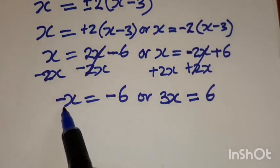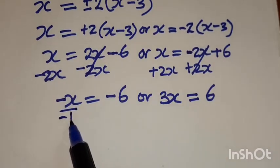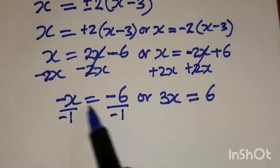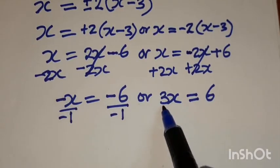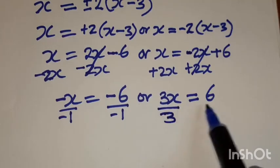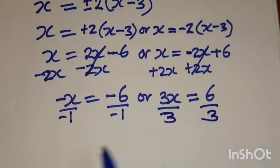Then for us to get a value of x, we are going to divide by negative 1 on both sides. Then this side, we are going to divide by 3 on both sides.